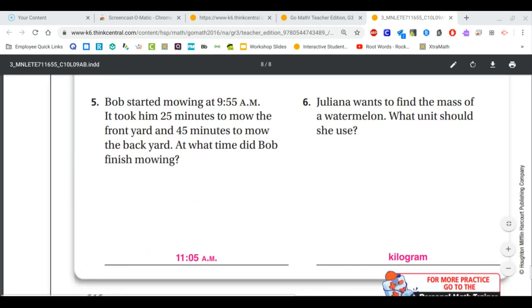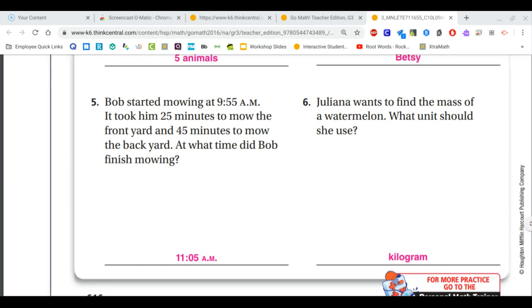For number five, Bob started mowing at 9:55, 25 minutes to mow the front and 45 minutes to mow the back. What time did he finish mowing? That means we start at 9:55 and then move forward in increments of five or ten minutes at a time until we get to 25 minutes and then 45 minutes. When we do both of those, we end up getting to 11:05 AM.